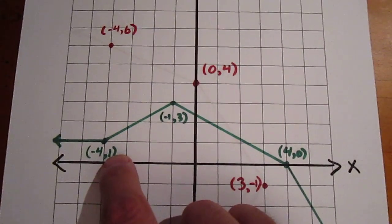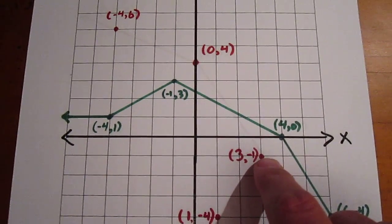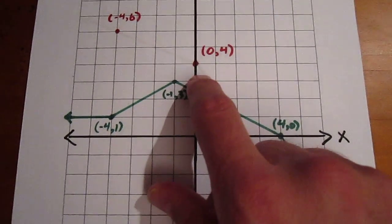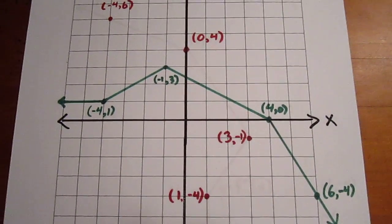Negative 4, 1 becomes 1, negative 4. Negative 1, 3 becomes 3, negative 1. 4, 0 becomes 0, 4, and 6, negative 4 becomes negative 4, 6. And then we ask ourselves, what happens in this function?